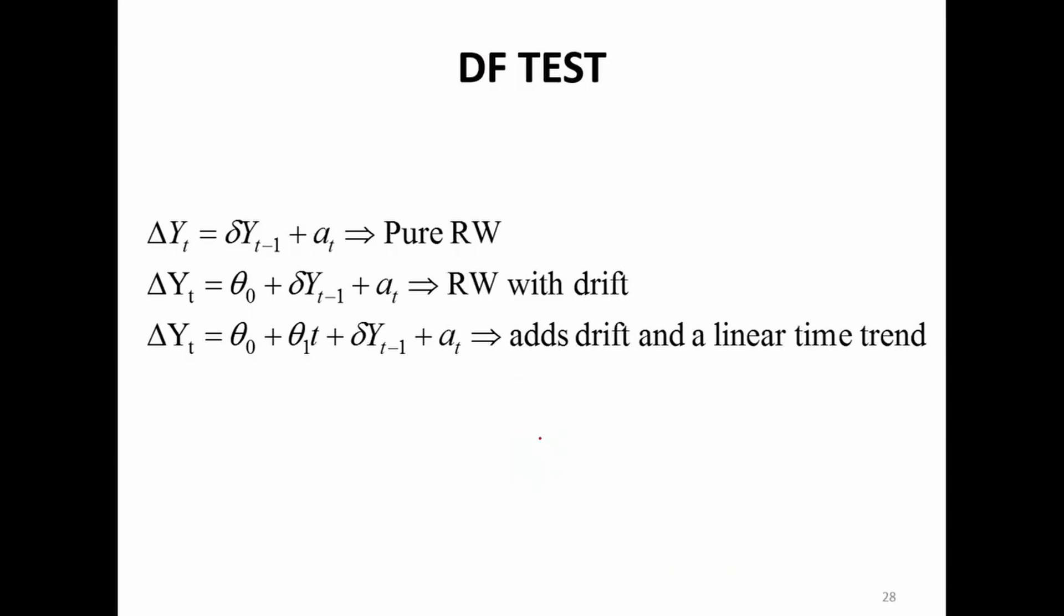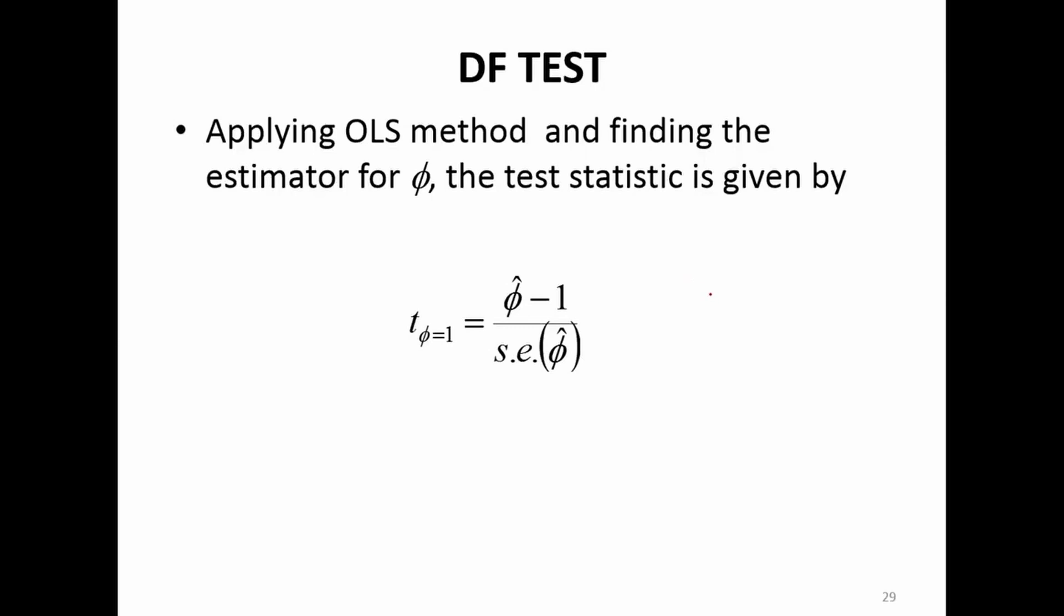There are 3 types of Dickey Fuller test we can do. I am not going to do the details of it, but depending on the kind of random walk we are trying to understand, we will have different type of Dickey Fuller test. The first case is a pure random walk, there is no drift, there is no theta term. It is just the past value of yt. We would like to know if the coefficient is 0 or not in this case. The second case, we have a drift. And in the third case, we have a drift and we also have a deterministic time component, theta 1t. It is just a combination of deterministic and stochastic trend, linear time trend. We can do all 3 and see which one is actually the best for the given time series data.